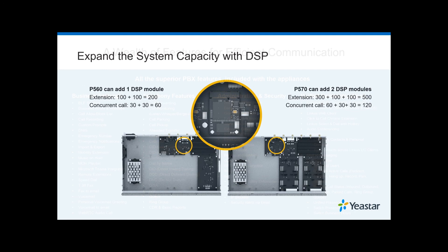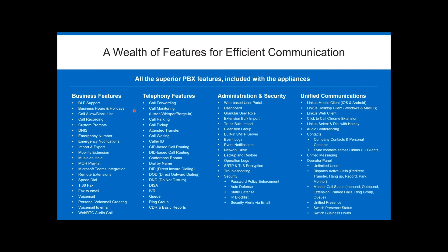This is a fairly comprehensive list of features — business telephony features you'd see in traditional systems, all the way to how to administer, maintain, and secure the systems, and then unified communications. The Linkus mobile client provides a lot of flexibility — not just mobile, but the desk client and the web client, which appear on three different device types. There's also a click-to-call feature, and today — May 13th — a new firmware has been released that links Linkus with Google.